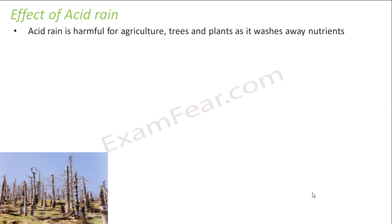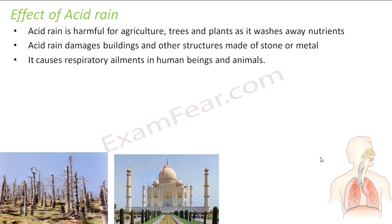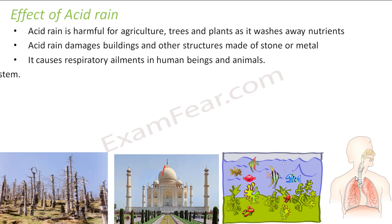So let's talk about the effects of acid rain. Acid rain is very harmful to agriculture, trees, and plants — it will wash away all the nutrients. This is the condition of a plant after acid rain. It also damages buildings; for example, the Taj Mahal is totally damaged by acid rain.